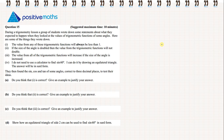The answer will be in surd form. They then found the sine, cosine and tan of some angles correct to three decimal places to test their ideas. Part A: do you think statement 1 is correct? Give an example to justify your answer.